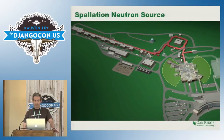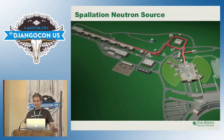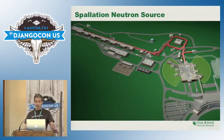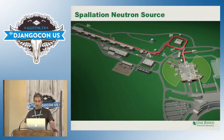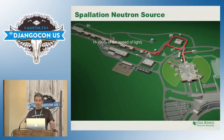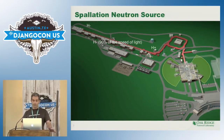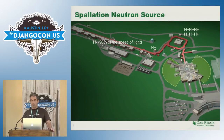A quick introduction about the Spallation Neutron Source. We work with neutrons, which have a wavelength similar to the distance between atoms, allowing us to study matter. To produce neutrons, we produce hydrogen ions — an atom of hydrogen with two electrons — speed them in a linear accelerator to roughly 90% the speed of light, chop off the two electrons, accumulate them in a ring, and fire them at a mercury target to obtain neutrons.